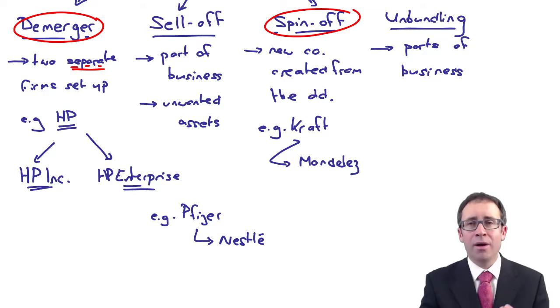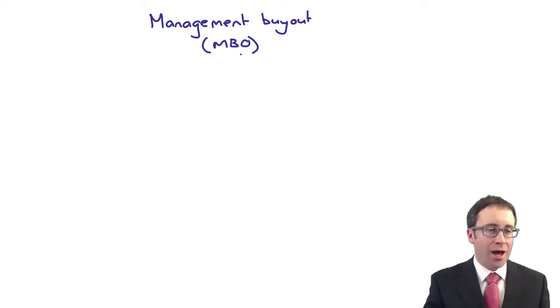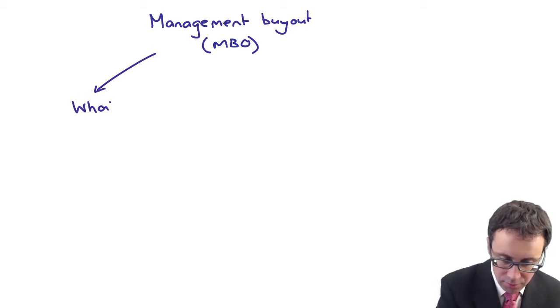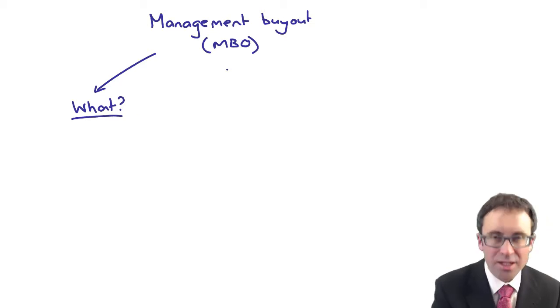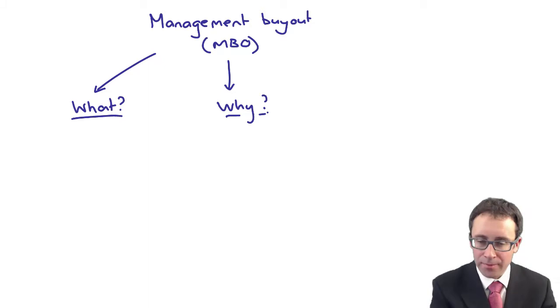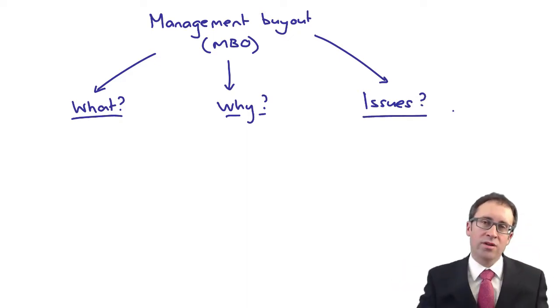What we're going to do now is look at a particular part of an exit strategy, which is your management buyout. Let's have a look at a management buyout, abbreviated to MBO for short. From your perspective, you need to think about what a management buyout is - I think it's quite literal and easy to understand - and why would that actually happen, and more importantly, are there any issues that you need to consider?